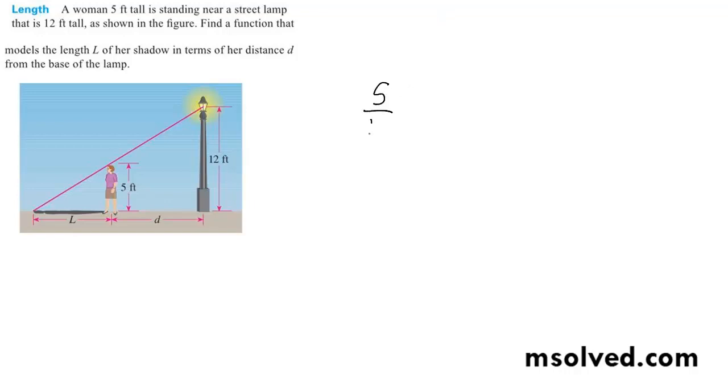So 5 over L is equivalent to 12 over, well we could call it DL. Actually, I take that back. D plus L.